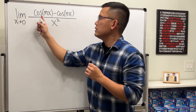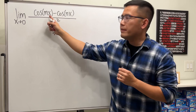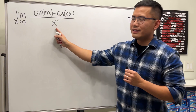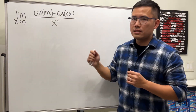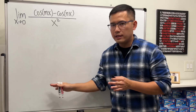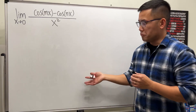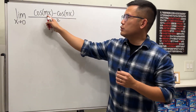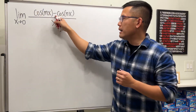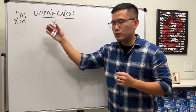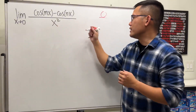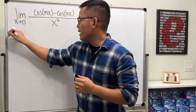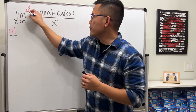Now let's look at this limit: the limit as x approaches zero of cosine(mx) minus cosine(nx) over x², where m and n are just constants. Our answer will likely be in terms of m and n. Plugging in zero: cosine 0 is 1, minus cosine 0 is 1, so 1 minus 1 is zero on top; and zero squared is zero on the bottom. So we use L'Hôpital's Rule.